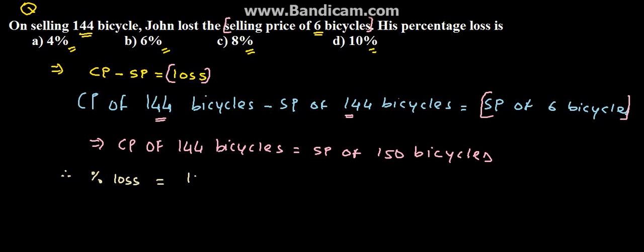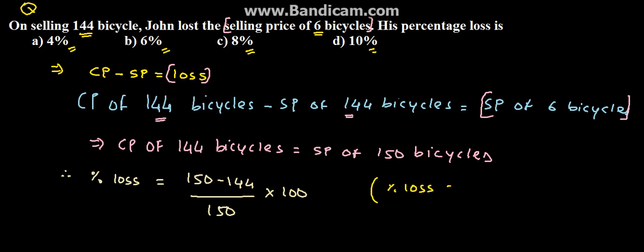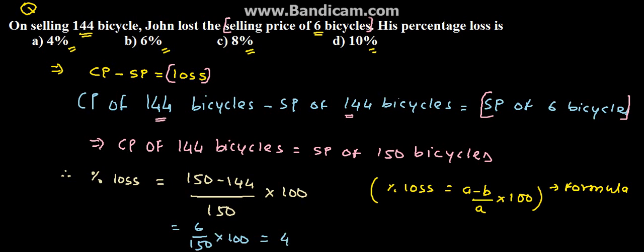Now we find the percent loss. The formula is: loss percent equals (A minus B) divided by A, into 100 — that is (150 minus 144) divided by 150, into 100. This gives 6 over 150 times 100, which equals 4%. Therefore, option A, 4%, is the solution.